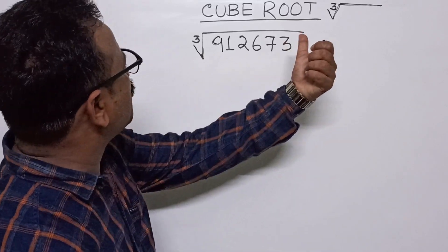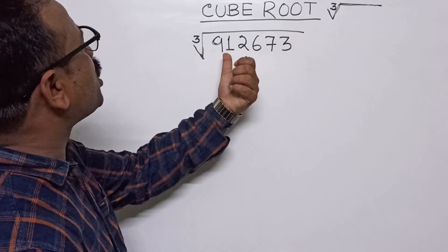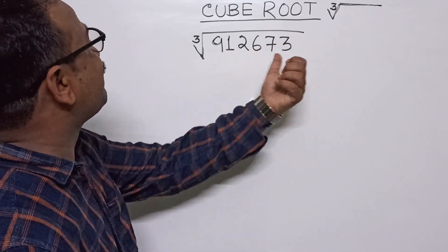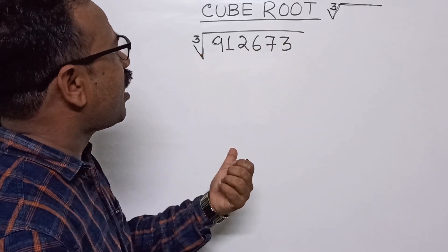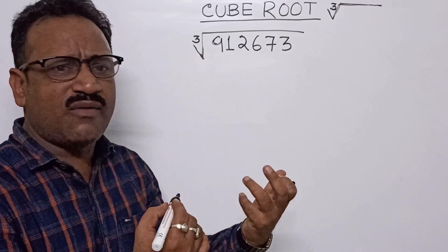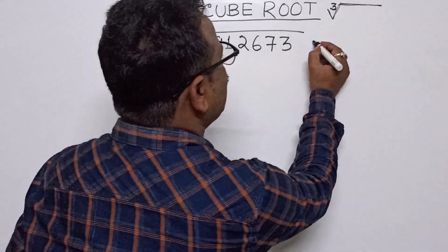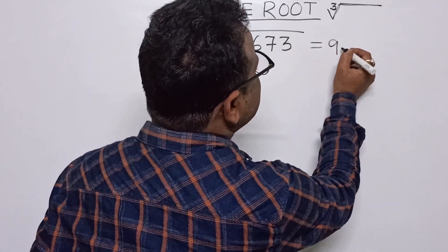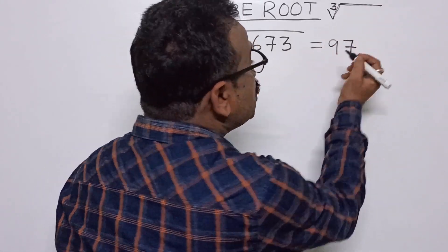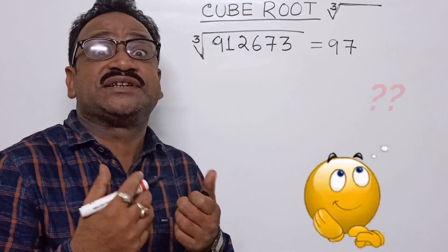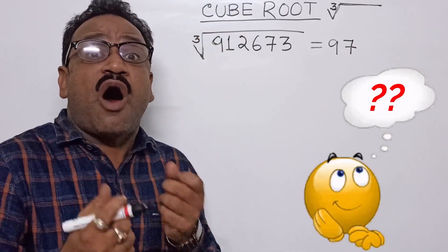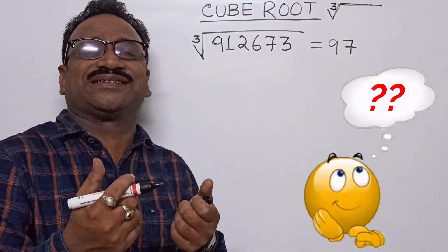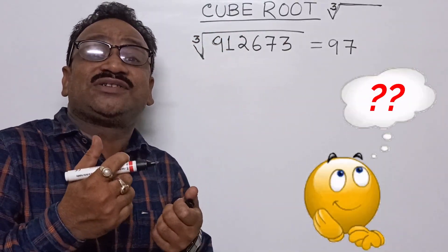That was the trick I revealed. So cube root of 912673 — how much? It equals 97. How did I do it in a fraction of seconds? Let's see the trick.